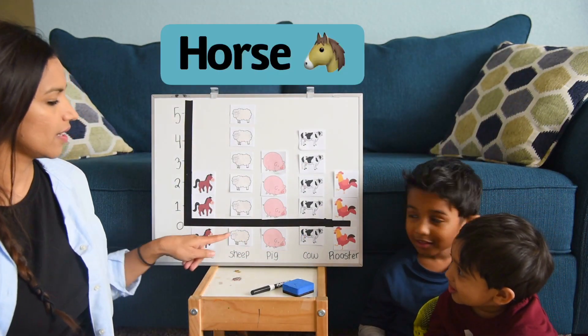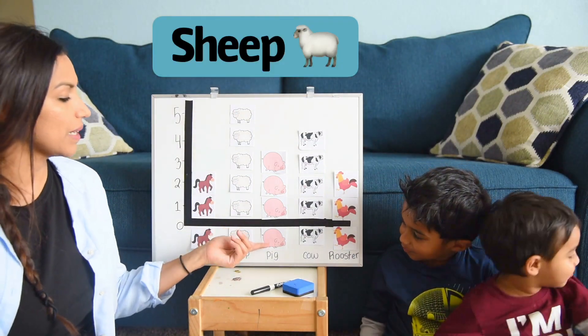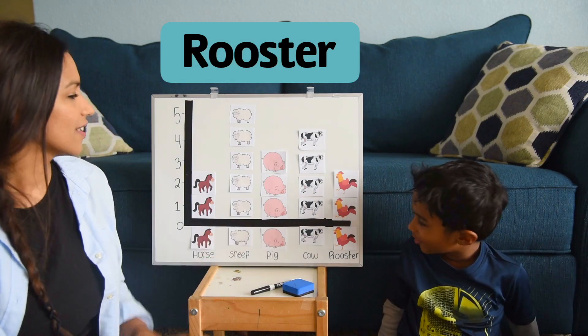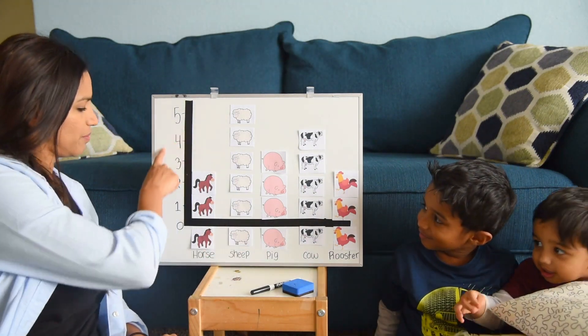So let's say horse, sheep, pig, cow, rooster. And what do you think these numbers mean?